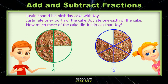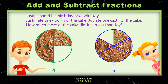We want to know how much more of the cake Justin ate, so that is going to be subtraction. And much like addition with fractions, we can't subtract these the way they are, because first we need to make common denominators. So we could multiply 4 times 6 to get a common denominator of 24, but 4 and 6 also have 12 in common, so we could do that.